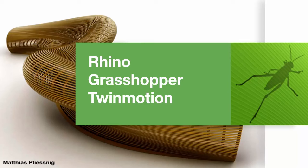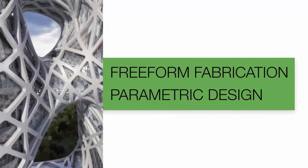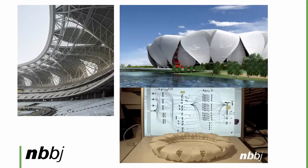Before we look at the details of the direct link, let's quickly look at how Rhino and Grasshopper are being used in the AEC industry for those who might not be familiar. Rhino is used really for two things: freeform fabrication and parametric design. This is a good example — a Rhino and Grasshopper model done by MBJ.